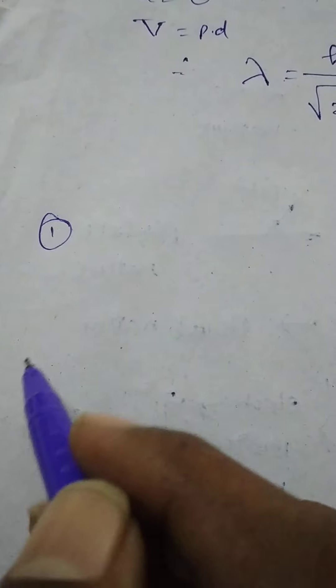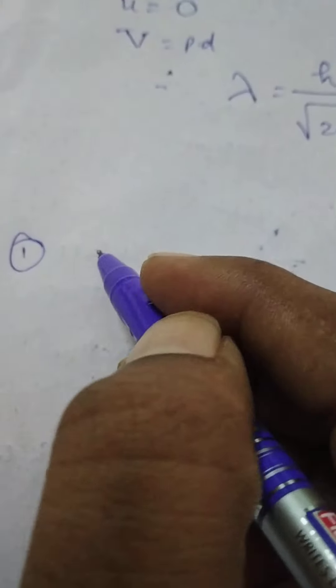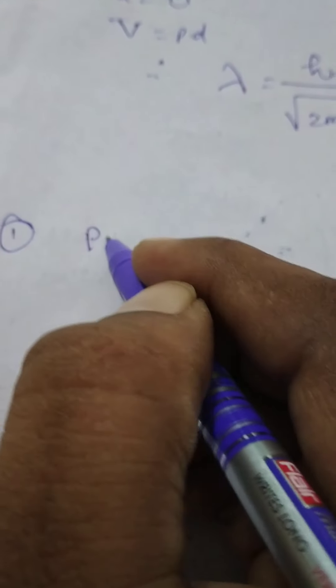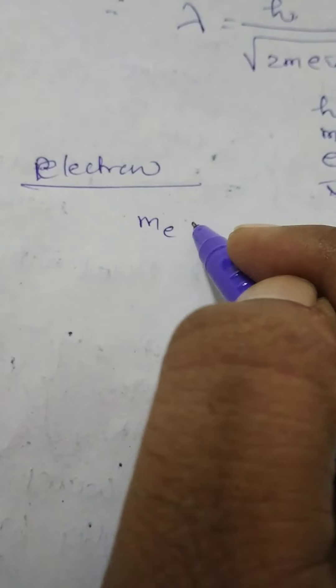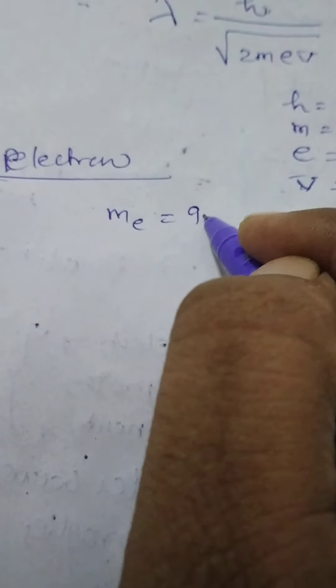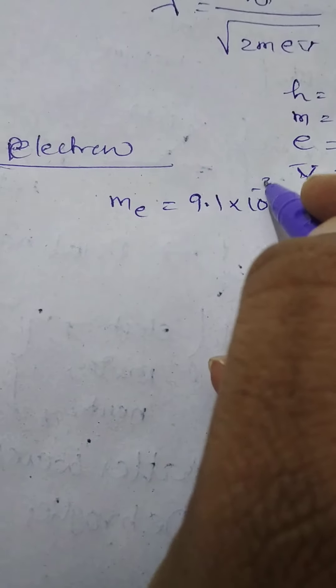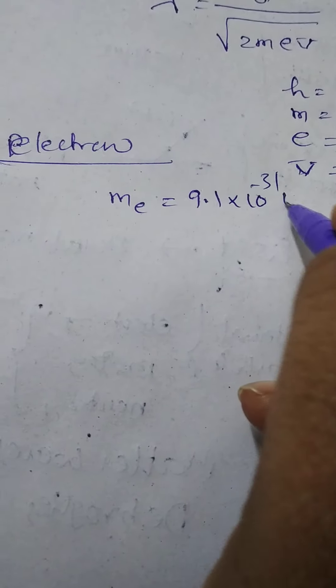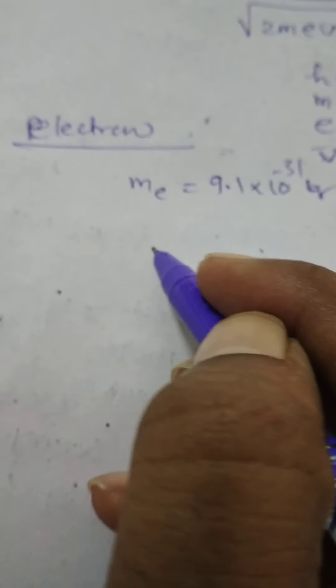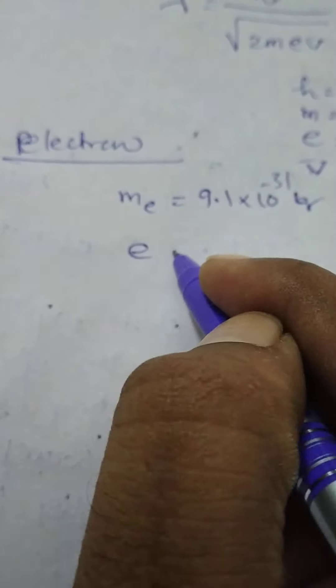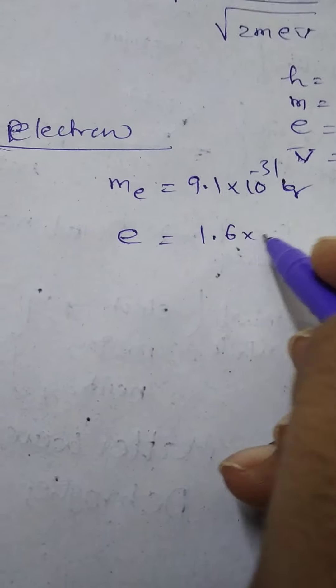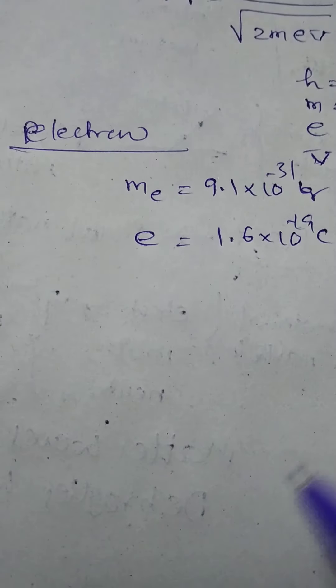For example, first one, let us take an electron. Mass of the electron is equal to m_e, it is nearly 9.1 into 10 power minus 31 kilograms.